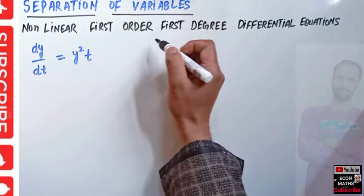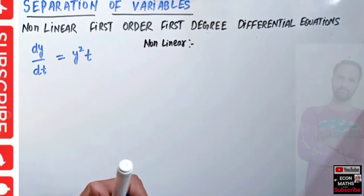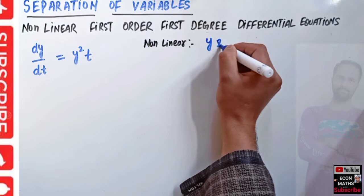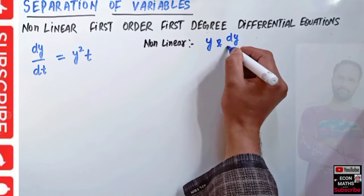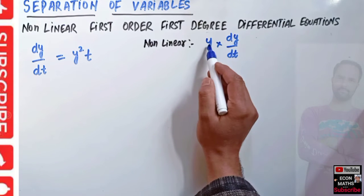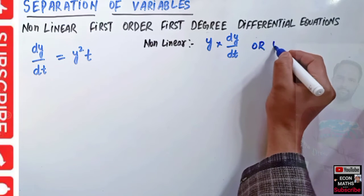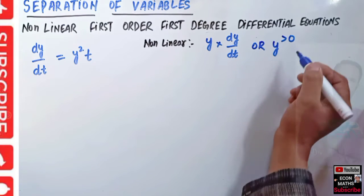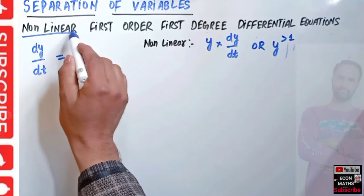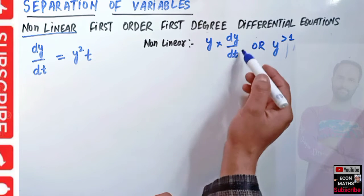Now, why is it nonlinear? A differential equation is said to be nonlinear if there is a product of y and dy/dt. If a differential equation has a product of y times the derivative, or if y is raised to a power greater than 1, we say the equation is nonlinear. Here you can see y is raised to a power greater than 1, so it is nonlinear.